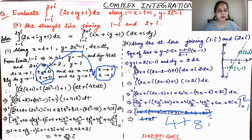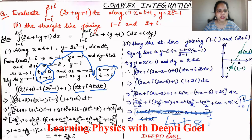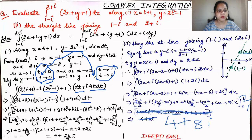Now we substitute the limits of t as 0 to 1. For x we substitute t + 1, for y we substitute 2t² - 1, dx = dt, and dy = 4t dt. Our integral is now entirely in terms of t, and using normal rules of integration with limits 0 to 1, we get the answer as 4 + 23i/3.